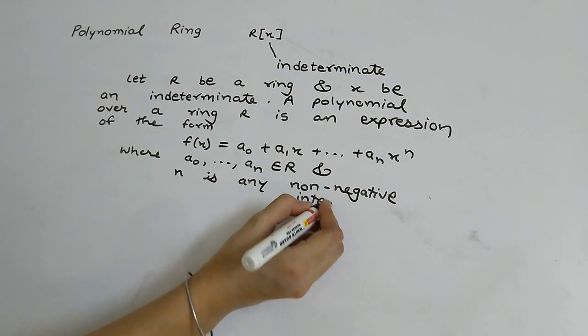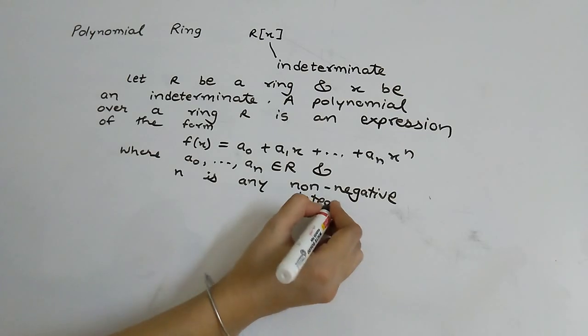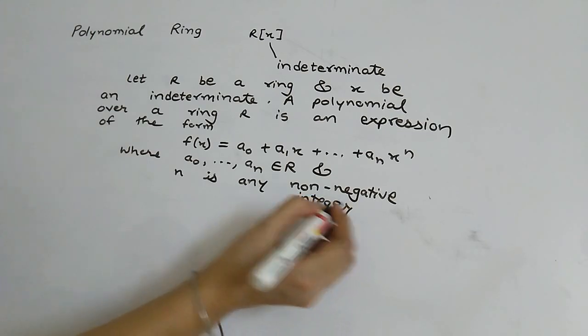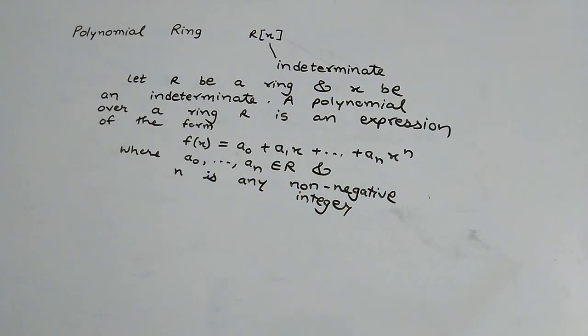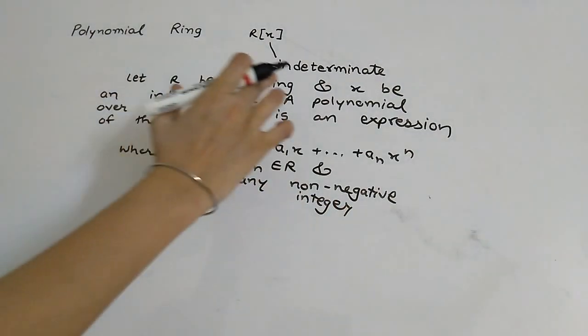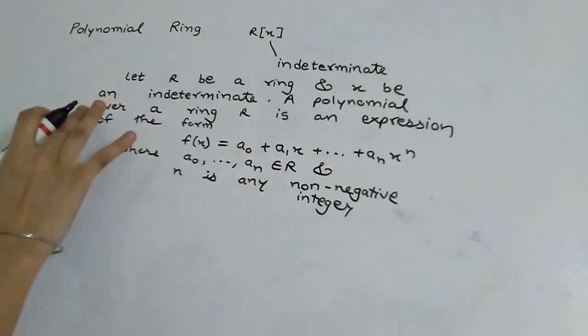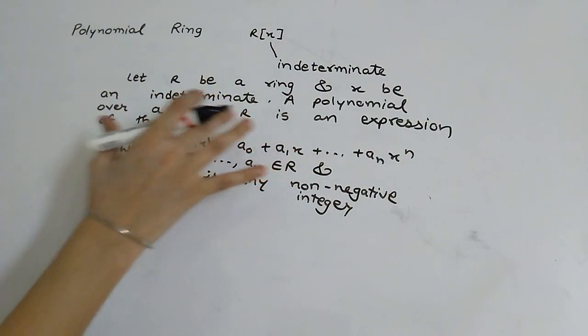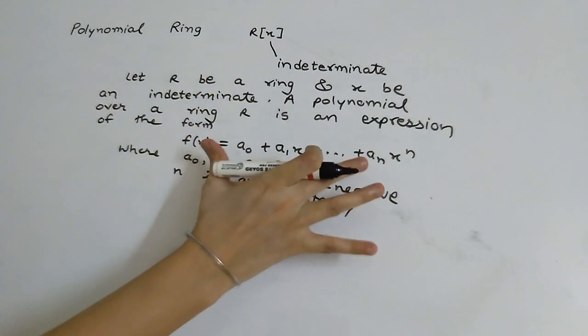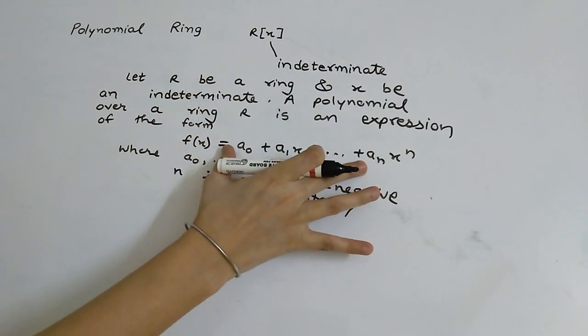So for a polynomial ring, what we need initially is a ring. A polynomial over a ring is an expression of the form as defined above.